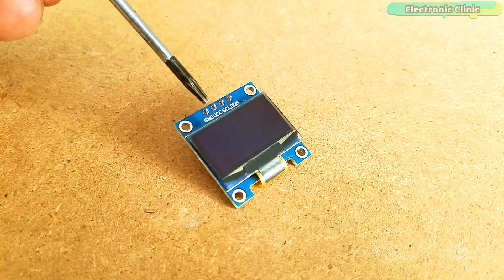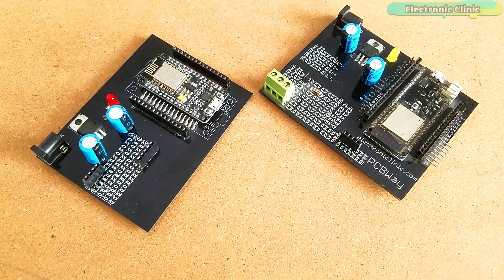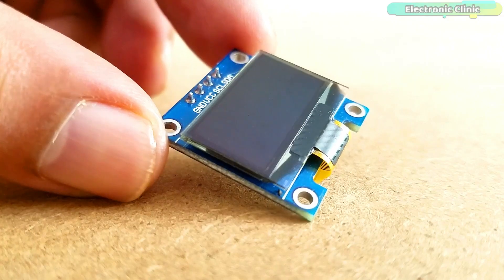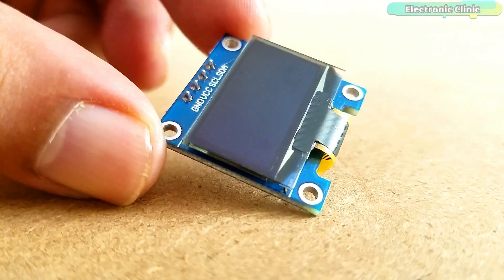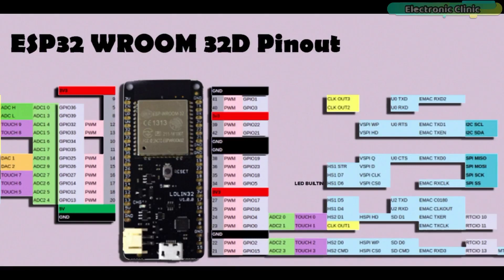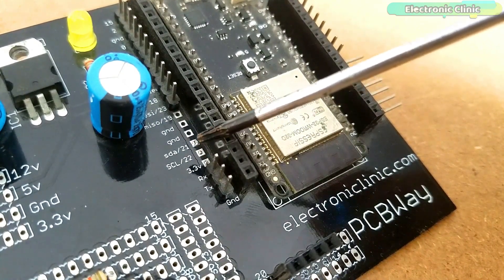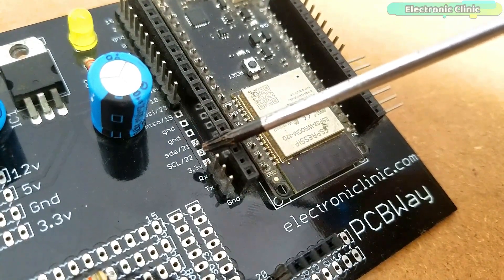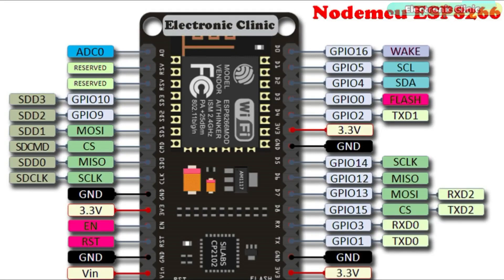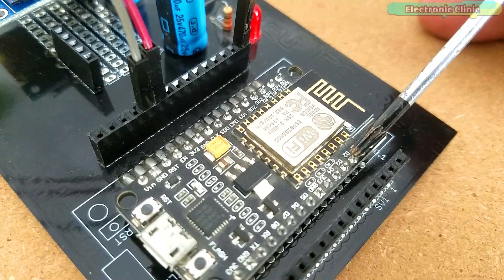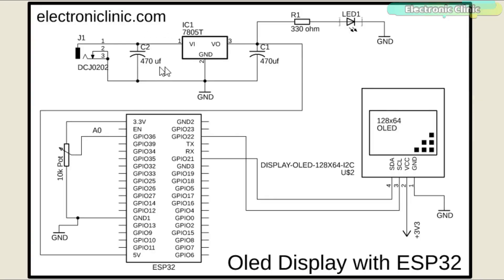This OLED display module can be easily powered using 3.3 volts. As the ESP32 and ESP8266 are 3.3V controller boards, we will use 3.3 volts to power up the OLED display module. On the ESP32, GPIO21 is the SDA and GPIO22 is the SCL, so using these two pins, multiple I2C devices can be connected. On the NodeMCU ESP8266, D1 is the SCL and D2 is the SDA, and these pins can likewise be used to connect multiple I2C supported devices.